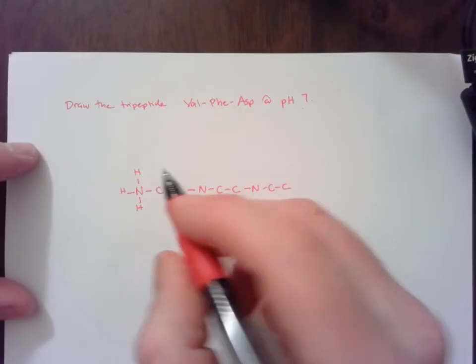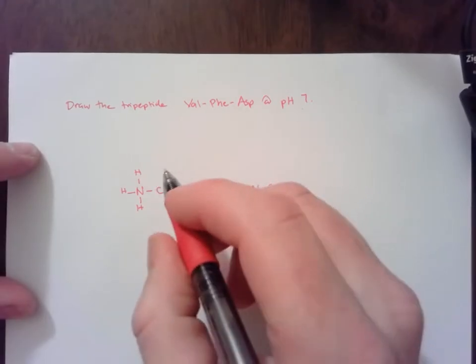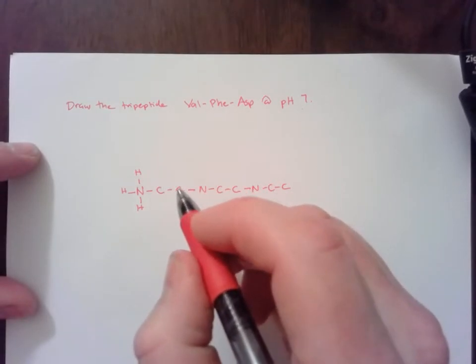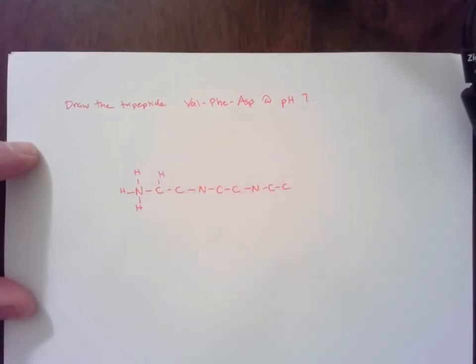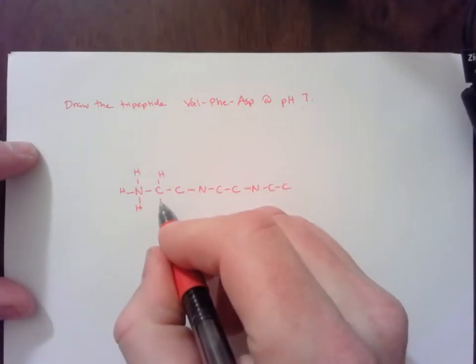The next C is going to be my alpha carbon, which is where my R group is attached. So there's going to be an H on that C. And then that's where the R group is.